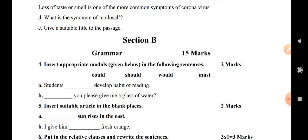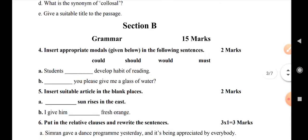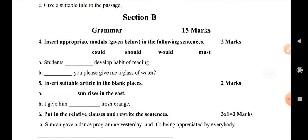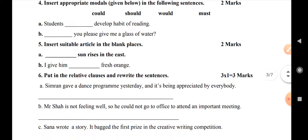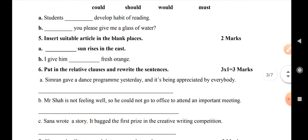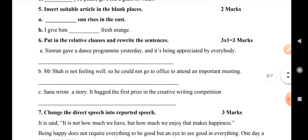Question number 4: insert appropriate modals given below in the following sentences. We have a few modals given, and this will be put in the following two parts for two marks. Question number 5: insert suitable articles in the blank places. We have a few articles given, for two marks. Then question number 6: insert suitable articles in the blank places, for three marks.